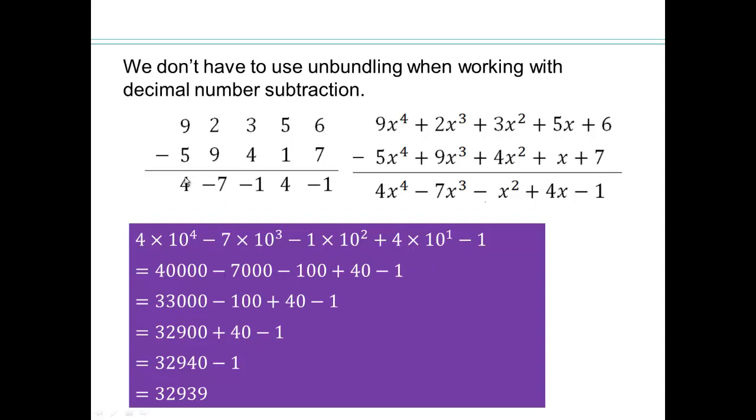If we write it in the expanded form, we have 4 × 10³ - 7 × 10³ - 1 × 10² + 4 × 10¹ - 1. Negative 1 is in the units place, 4 is in the tens place, negative 1 in the hundreds place, negative 7 in the 1,000 place, and 4 in the 10,000 place. And then if we perform our addition and subtraction, you'll get the same 32,939 that we got before.